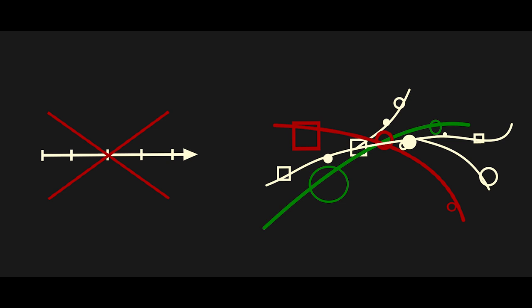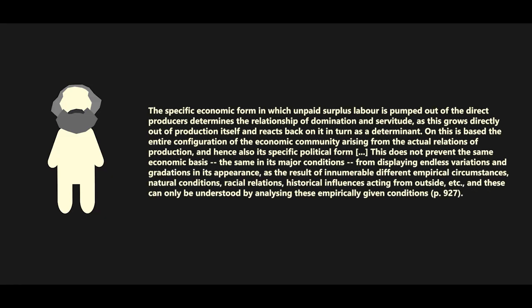In chapter 47 of volume 3, Marx lays out even more explicitly the variability of base and superstructure configurations. The specific economic form in which unpaid surplus labor is pumped out of the direct producers determines the relationship of domination and servitude, as this grows directly out of production itself and reacts back on it in turn as a determinant. On this is based the entire configuration of the economic community arising from the actual relations of production, and hence also its specific political form. This does not prevent the same economic basis, the same in its major conditions...